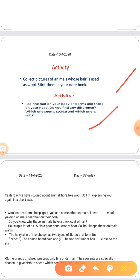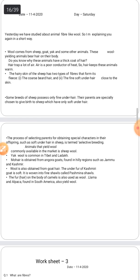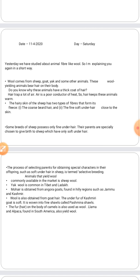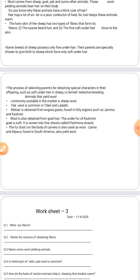In the revised slide, wool comes from sheep, goat, yak, and other animals. Why do these animals have a thick coat of hair? Because the hairs trap air, and air is a poor conductor of heat, which helps keep these animals warm. The hairy skin has two kinds of hairs: coarse hairs and fine, soft hairs.